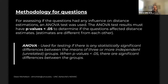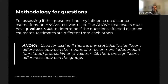To ensure the questions had no influence on the distance estimates, I used ANOVA — analysis of variance. The results require a p-value less than 0.05, which would give a 95% chance the differences didn't happen randomly. That tells us the questions did not affect the estimates.